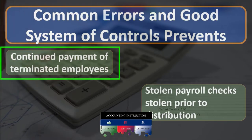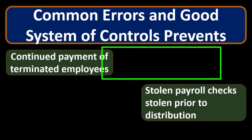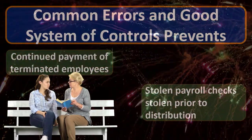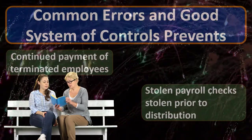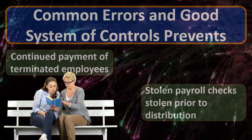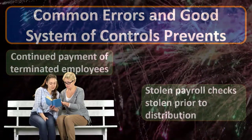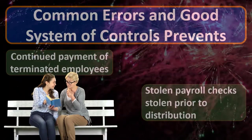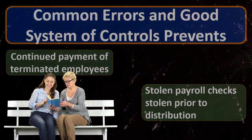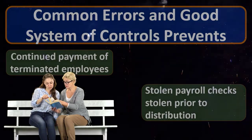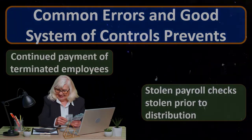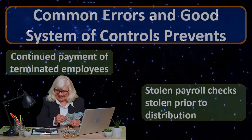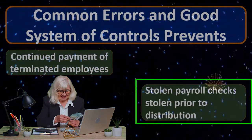Common errors that a good system of controls can prevent include continued payment for terminated employees, or even fraudulent systems where employees no longer on staff are still receiving paychecks deposited into similarly named accounts. If there is a separation between entering payroll data and distributing paychecks, that can help uncover these problems, including verification in both the distribution process and the data input side, as well as catching stolen paychecks prior to distribution.